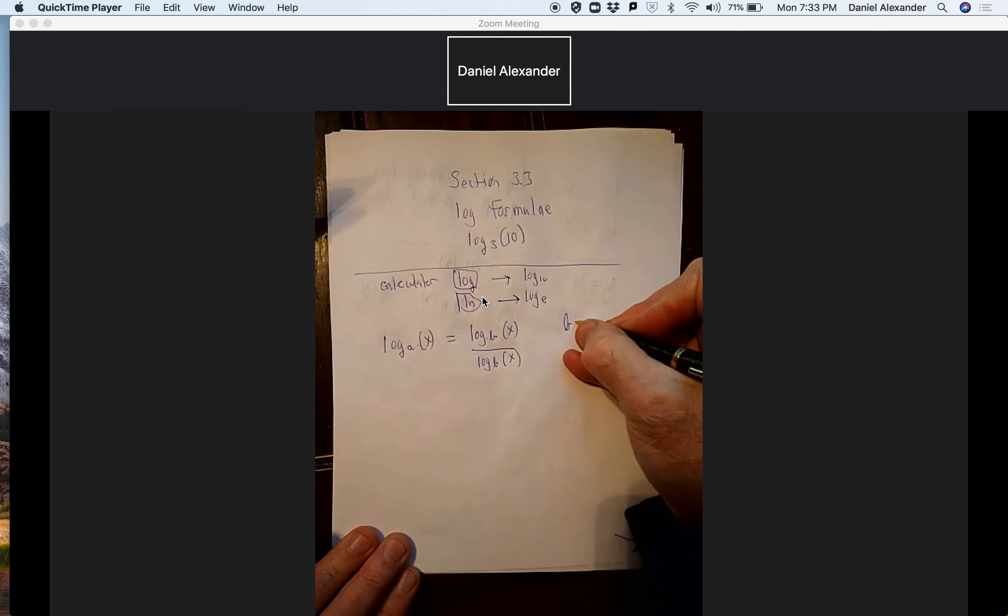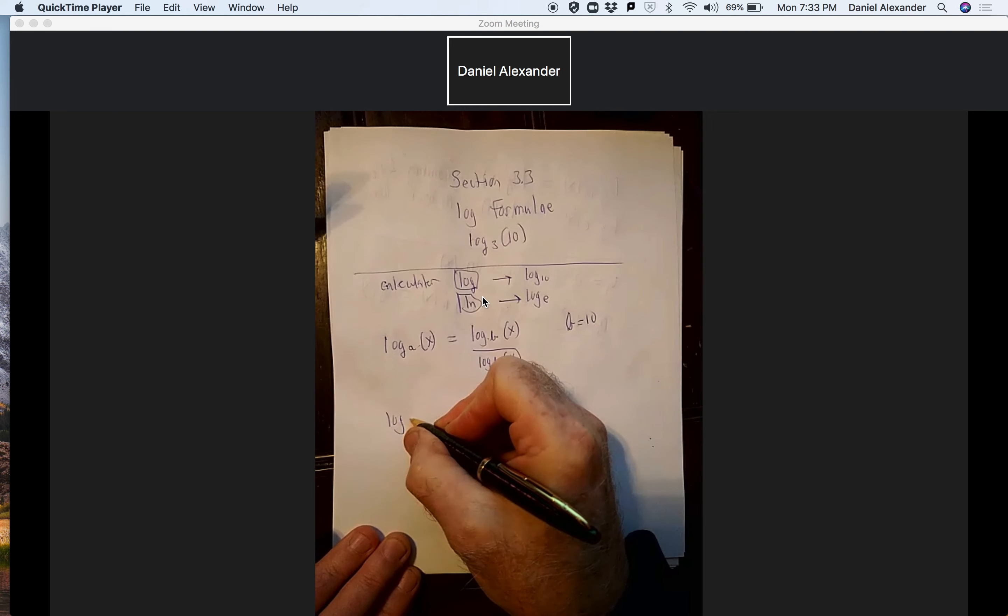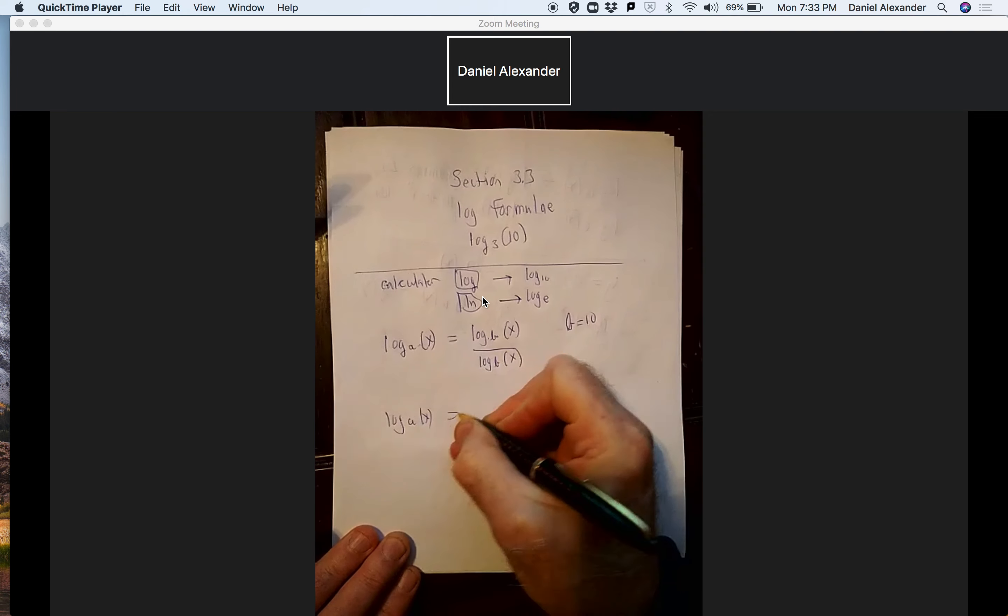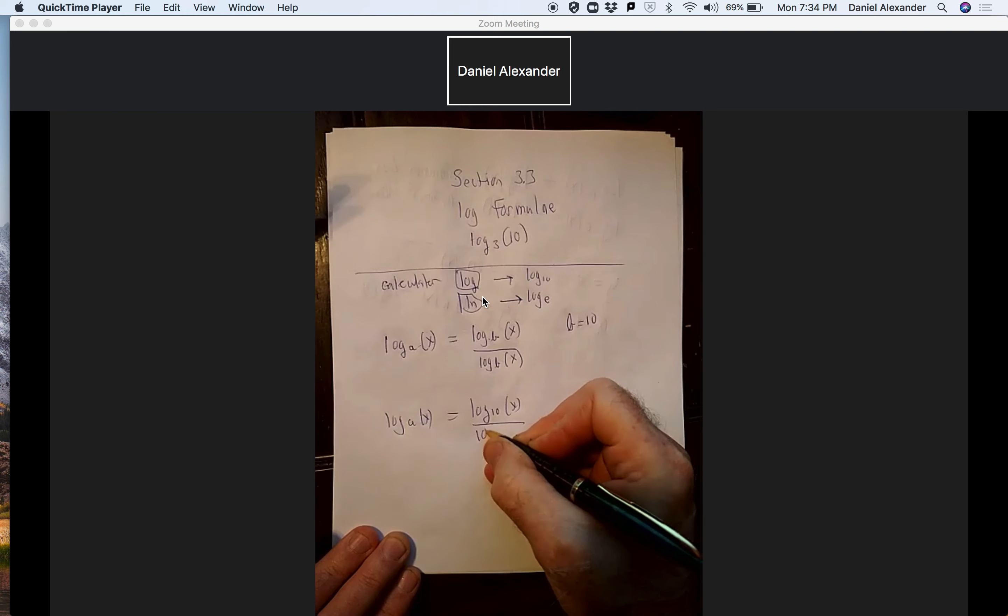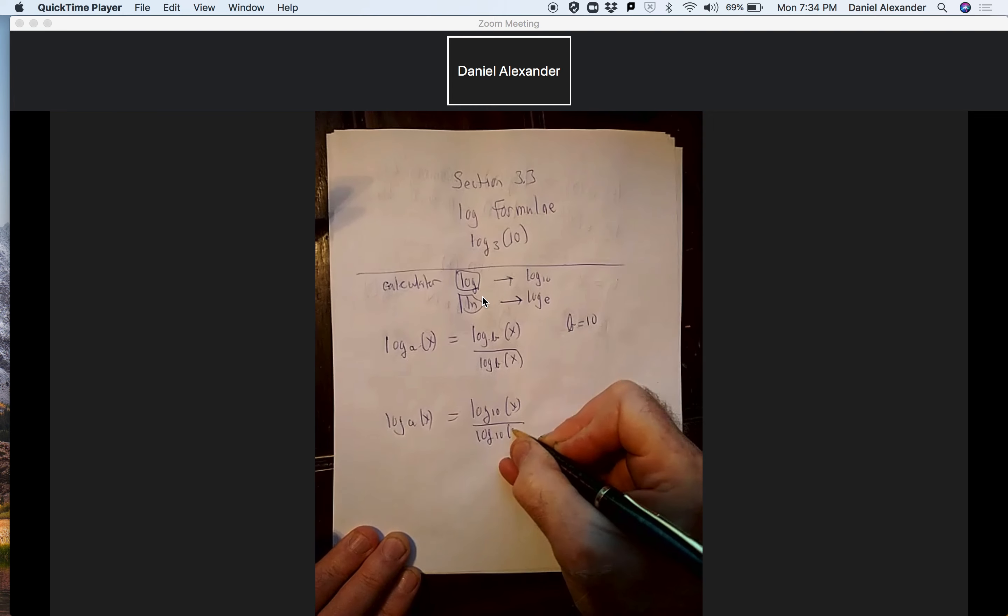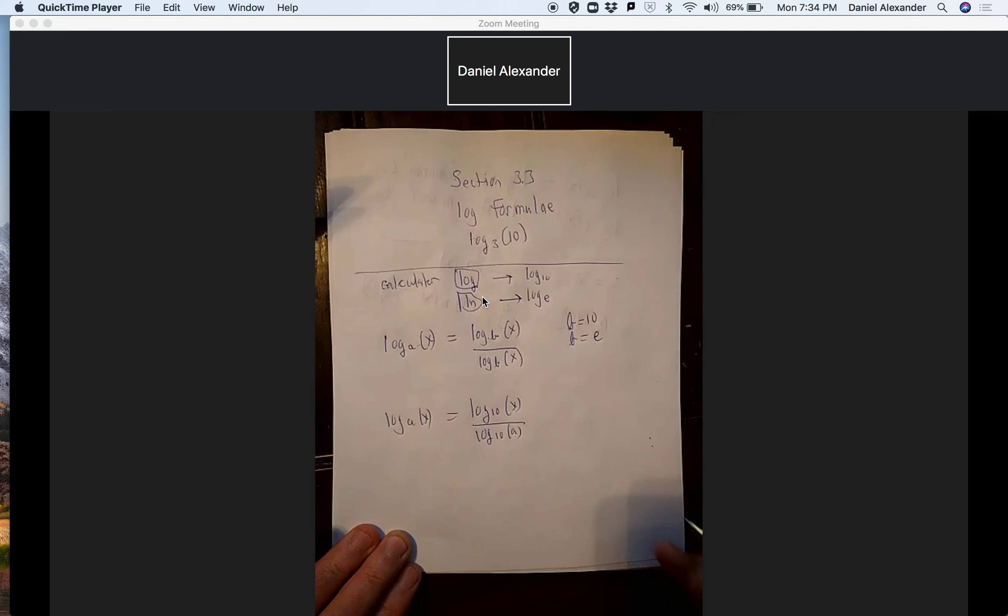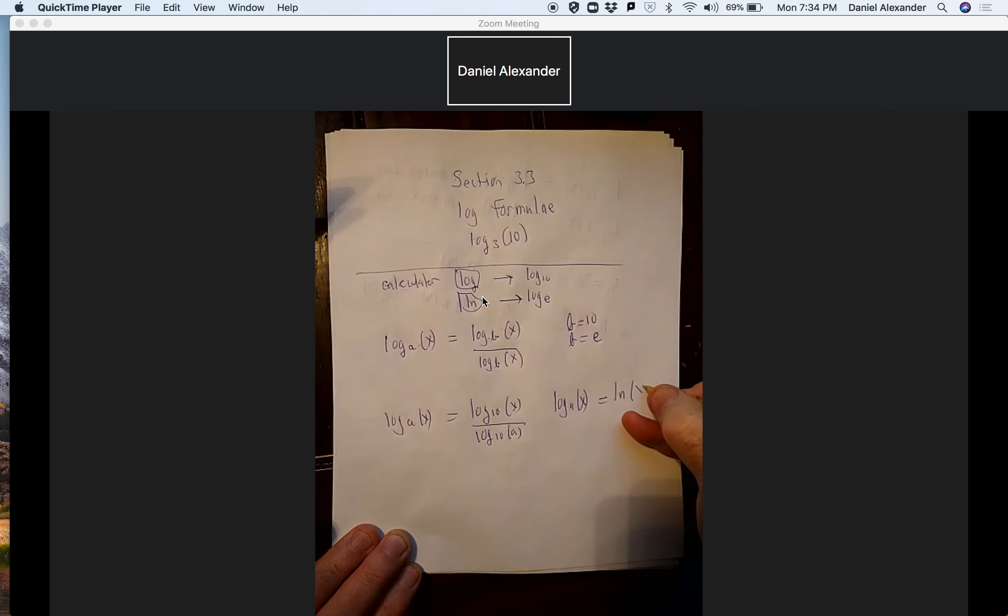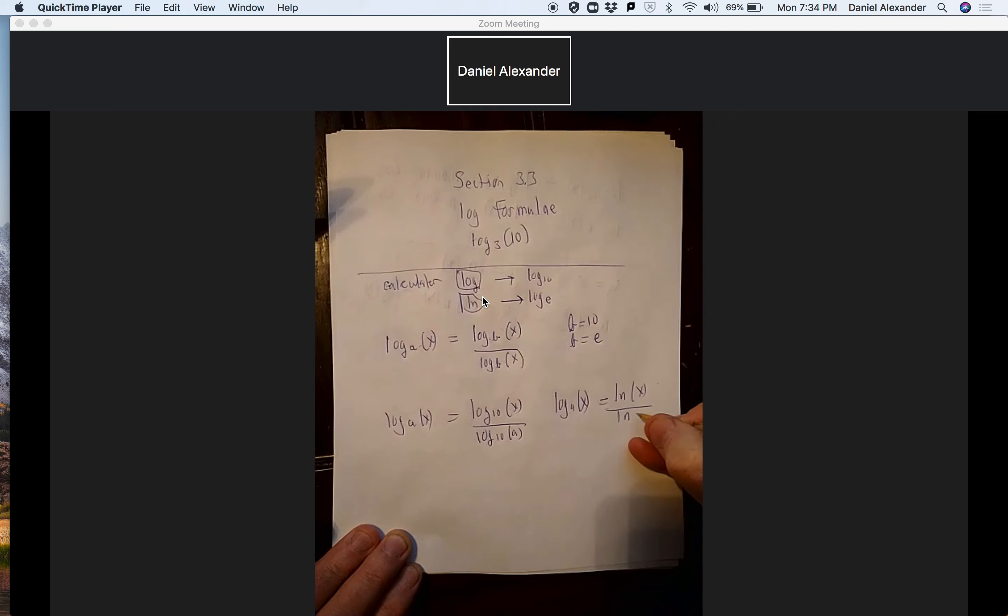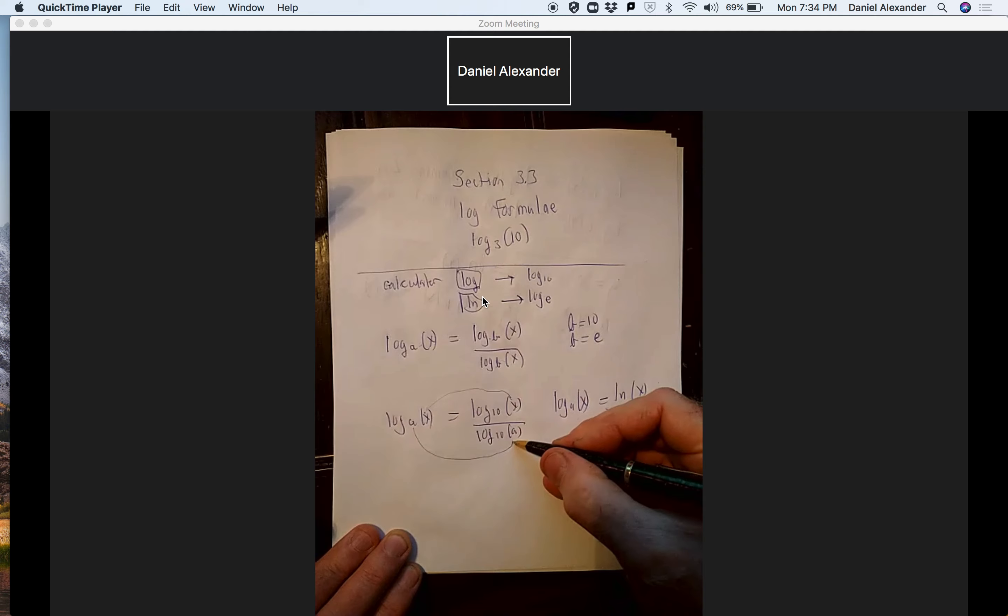We're going to use b equals 10. So we get the log base a of x is equal to the log base 10 of x over the log base 10 of a. Or we're going to use b equal to e, and so we would get log base a of x is equal to the natural log of x over the natural log of a. Always what you're taking the log of goes on top, the base goes on the bottom.